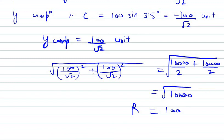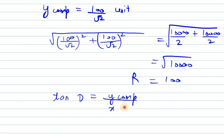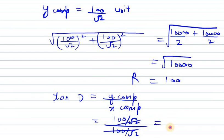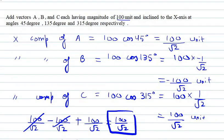To find the angle, we use tan θ = y-component / x-component. Since both the y-component and x-component are 100/√2, they cancel and we get tan θ = 1, so θ = tan⁻¹(1) = 45°. Therefore, the resultant is 100 units at 45° with the x-axis. This is the answer for question number 3.